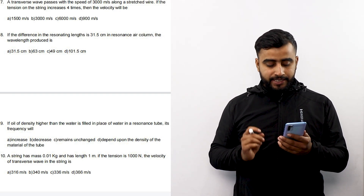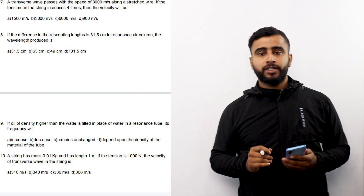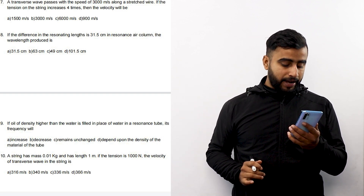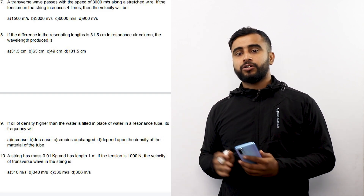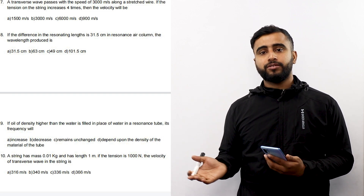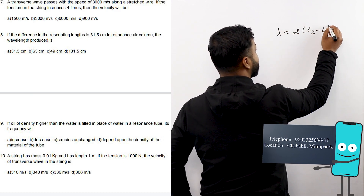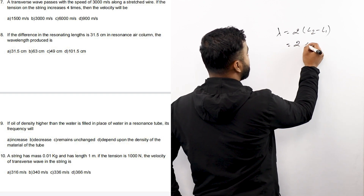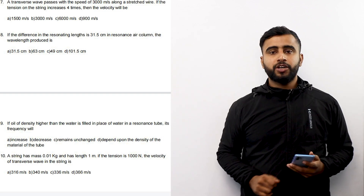Question number 8: In a resonance tube experiment, if the difference in resonating length is 31.5 cm, the wavelength produced is calculated using the simple formula: wavelength equals twice the difference. So wavelength equals 2 times 31.5 cm.